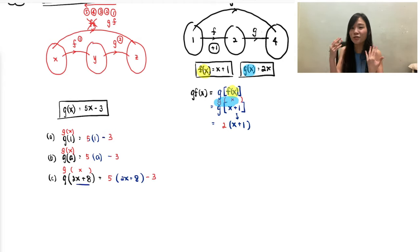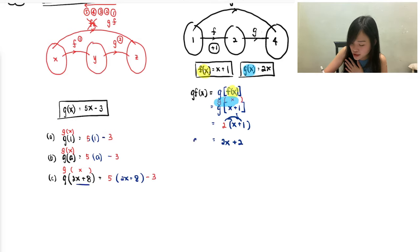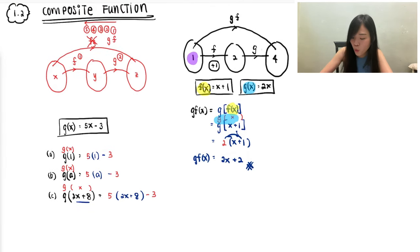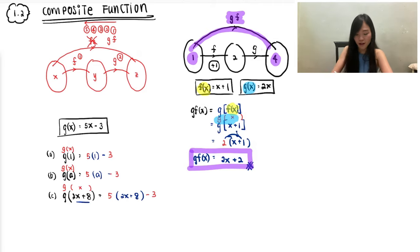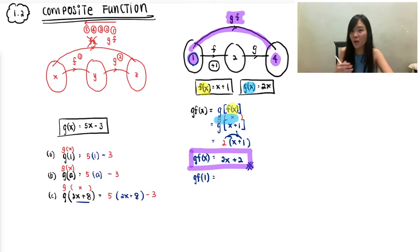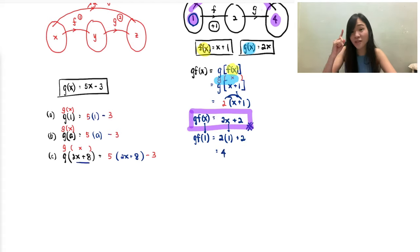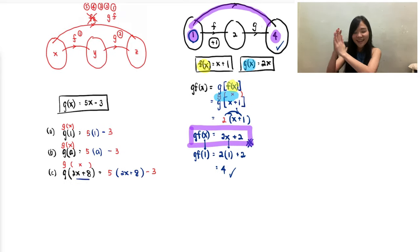So gf(x) = 2(x + 1). Expanding: 2 times x is 2x, 2 times 1 is 2, so gf(x) = 2x + 2. To verify: starting from 1, sub x = 1 in — 2(1) + 2 = 4. We get back the number we ended with, so the method is confirmed correct.